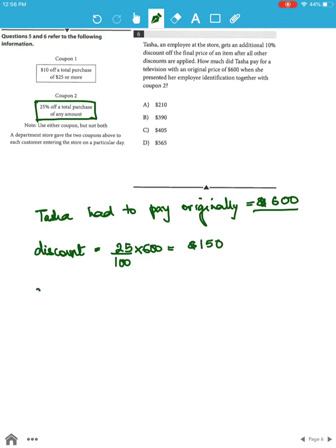That means her price after the 25% discount will be $600 minus $150, which is $450.